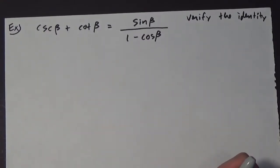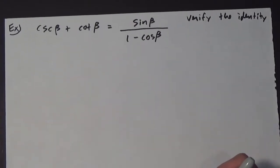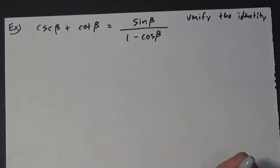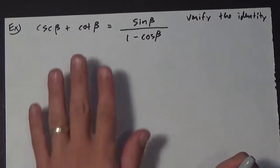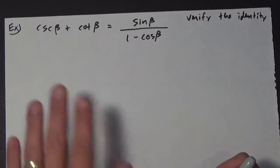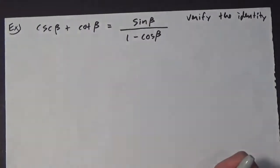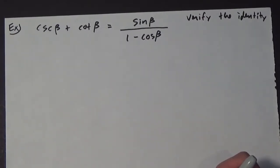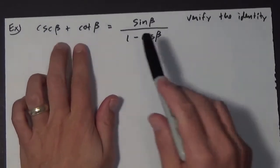Let's look at another example of verifying the identity. Here we have the cosecant of beta plus the cotangent of beta equals the sine of beta over 1 minus cosine of beta. You've got to choose one side or the other and try to make one side look like the other. In this case, it is pretty even — it actually does not matter which one you choose.